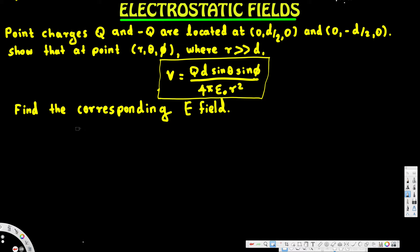To prove this, we look at the generic electric potential equation: ρ·a_r over 4πε₀r². We have to realize this dipole is oriented along the y-axis, because the first charge is at (0, d/2, 0) and the second charge at (0, -d/2, 0) — both only have a y-component. So ρ equals qd·a_y.